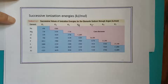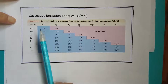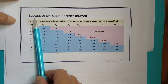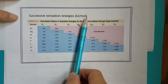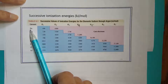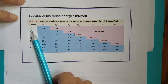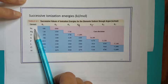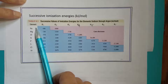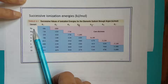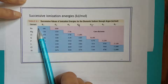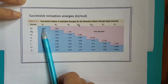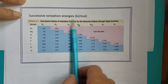First, let's review what successive ionization energy means. For example, sodium has one valence electron, so it's easy to lose that first electron and become Na+, which would require 496 kilojoules per mole.